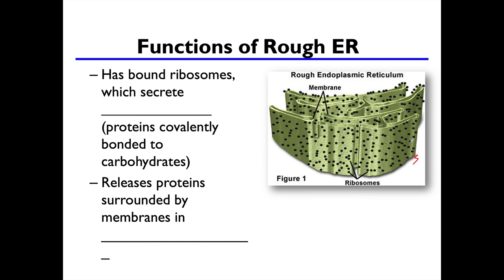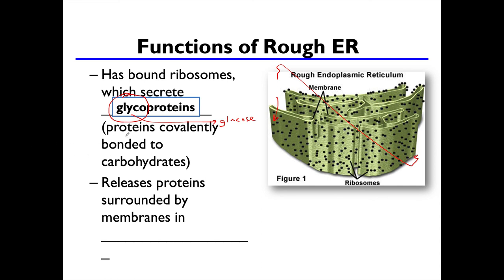Let's talk about rough ER as well. It sits right next to the smooth ER and has bound ribosomes that secrete glycoproteins. If an mRNA molecule comes through, the ribosomes will build a protein and attach a glyco part to it — glyco meaning sugars. So glycoproteins are proteins covalently bonded to carbohydrates: a string of amino acids with a carbohydrate portion. The rough ER builds them, buds them off, and releases proteins surrounded by membranes in vesicles.